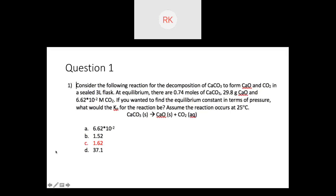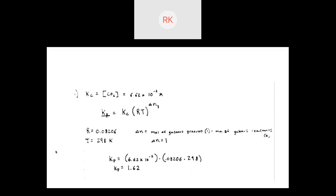Starting with question one — these are all screenshots from the practice exam. You're given a chemical equation. One thing you might notice is that only a single product is in the aqueous state; the rest are solids. That means your equilibrium is only going to be affected by CO₂, right? We leave solids and liquids out of our equilibrium expression. You're told certain amounts of moles of calcium carbonate and calcium oxide, but what we do care about is the concentration of CO₂. So the Kc for that equation will just be equal to the concentration of CO₂.